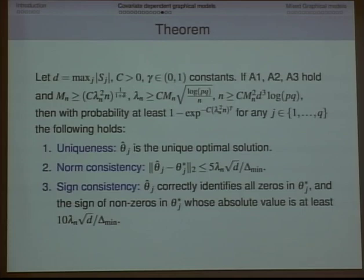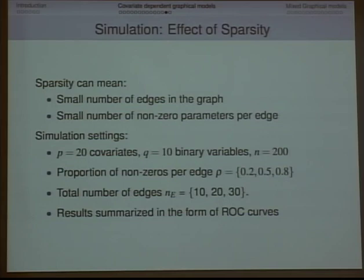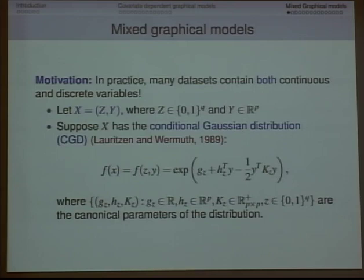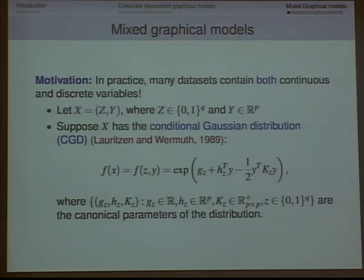For the mixed graphical model — another extension we looked at — this is a question I've gotten in talks multiple times from applied people. I used to work a lot on precision matrix estimation, and they would say: I really like this, but my dataset has both discrete and continuous variables. A lot of datasets do. You can't do the Gaussian model and you can't do the Ising model because they're mixed, which seemed very unsatisfactory — something we should be able to handle.